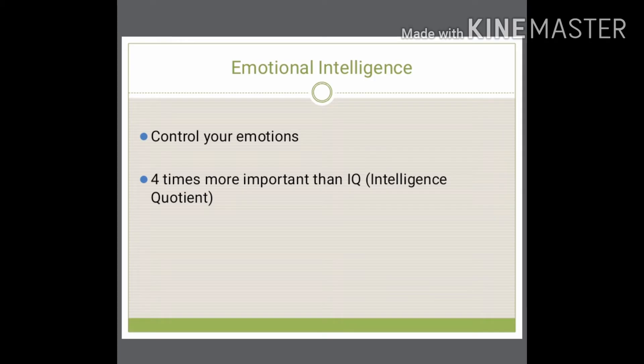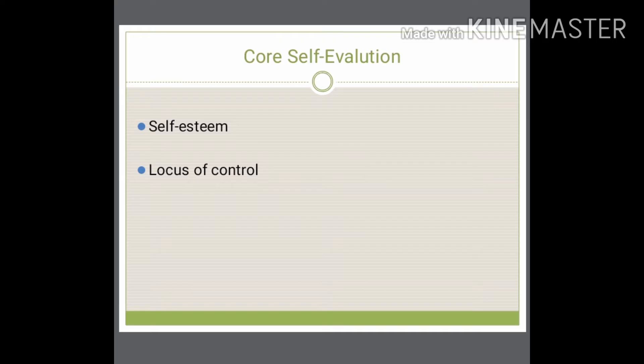The second pillar is core self-evaluation — your self-esteem. This looks at the extent to which people see themselves as capable, successful, and worthy. It involves two things: locus of control, and the belief about the extent to which one can control their own experiences.